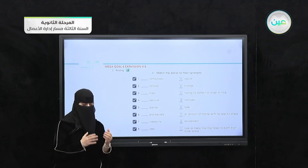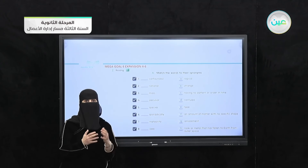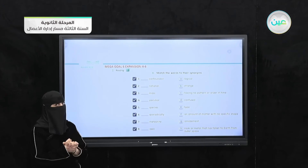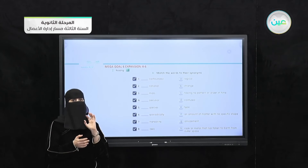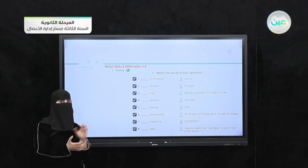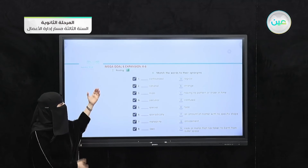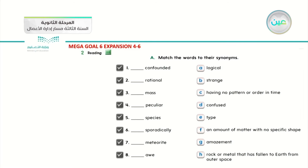After every reading passage, we have questions and idioms to discuss. Today's question is how to match words to their synonyms. The words appeared in the reading passage and we need to match them to their definitions. The eight words are: confounded, rational, mass, peculiar, species, sporadically, meteorite, and awe.